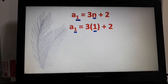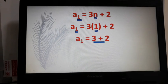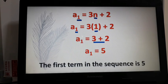Okay, so let's solve. Continue. 3 times 1, that will give us 3 plus 2. And then add 3 plus 2, that will give us 5. So our first term in the sequence is equal to 5.